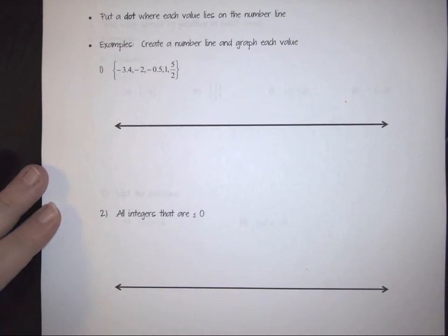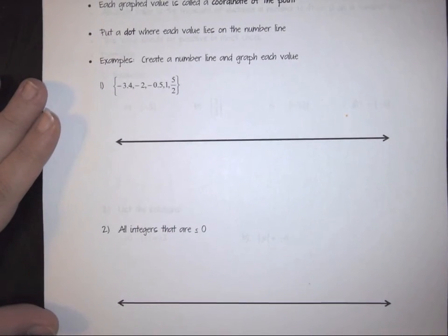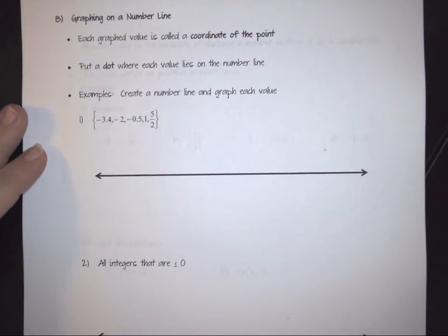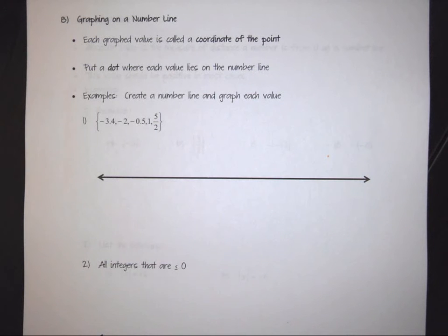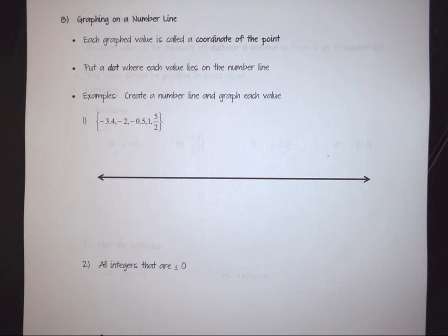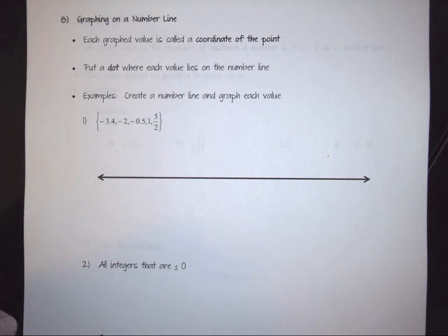Another thing we do a lot of when dealing with beginning numbers is graphing on a number line. We're taking a walk back through elementary math concepts, and one of those is using a number line. A number line is a line that has a collection of points called coordinate points — essentially a collection of dots where each dot represents an actual number.